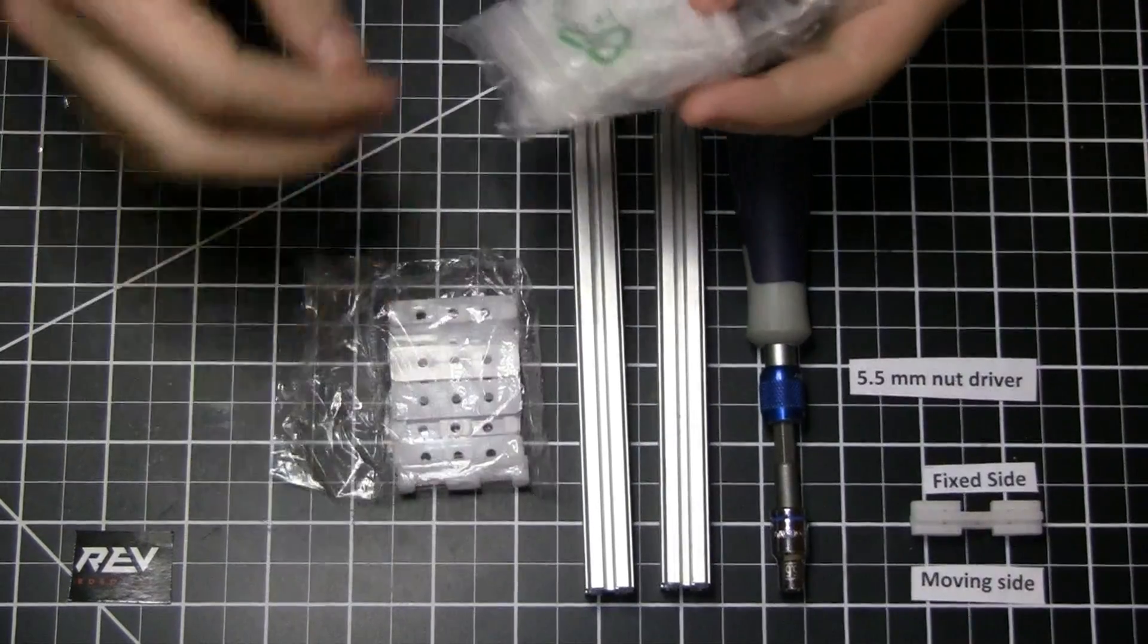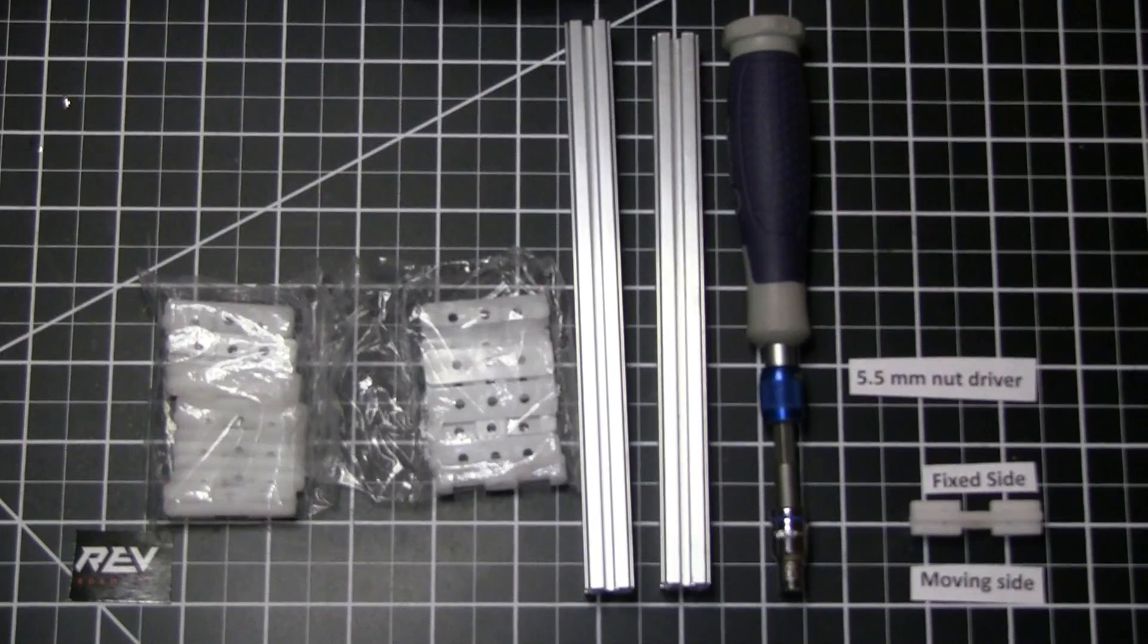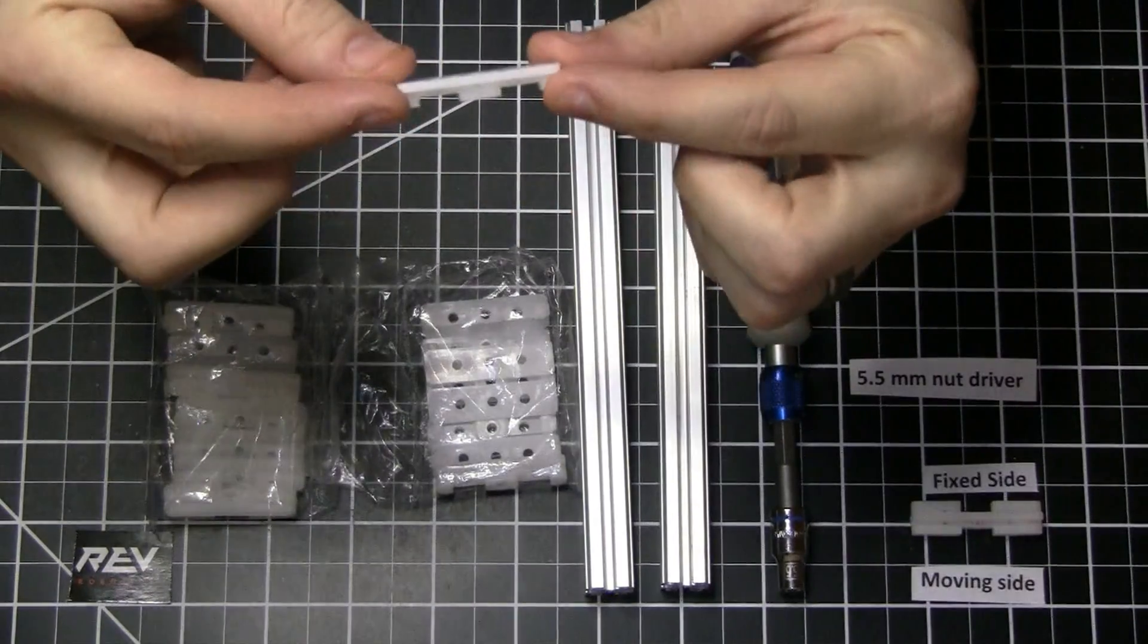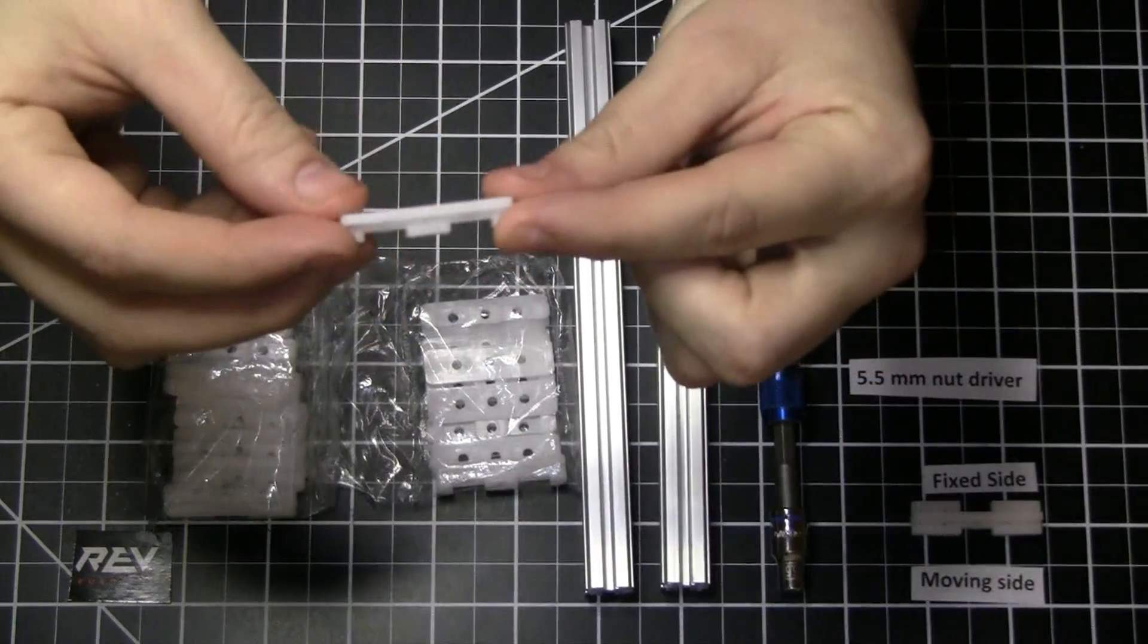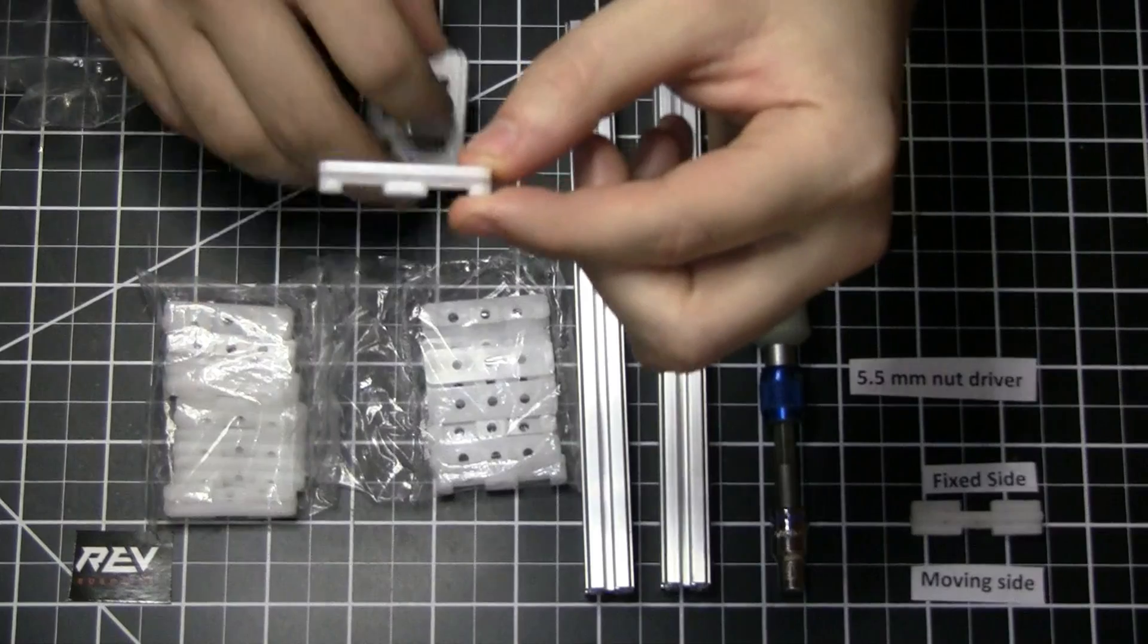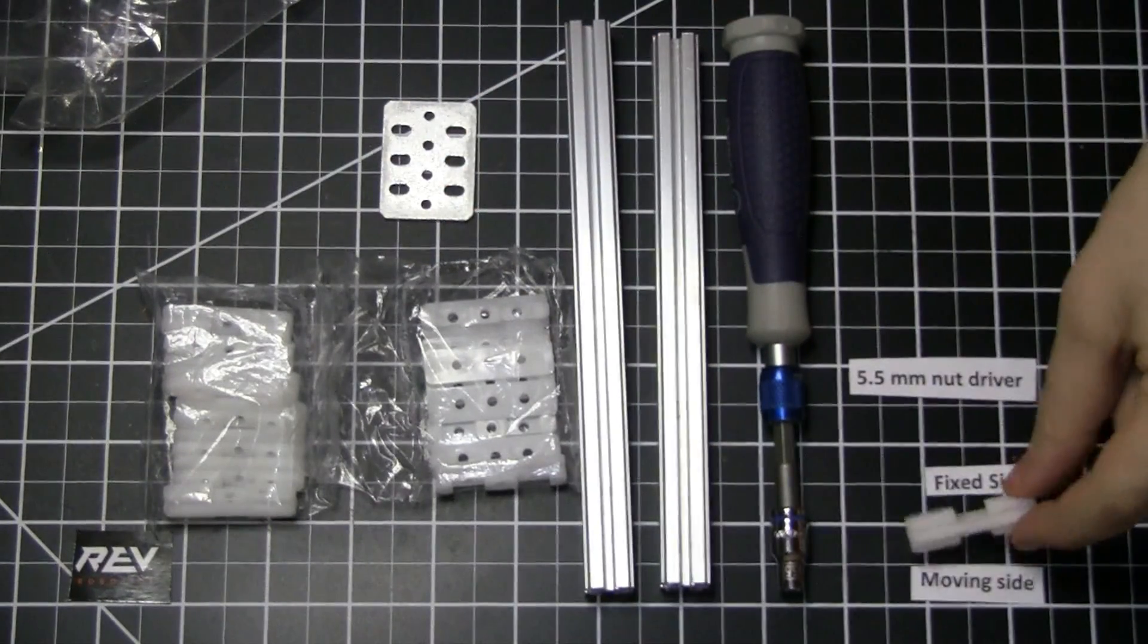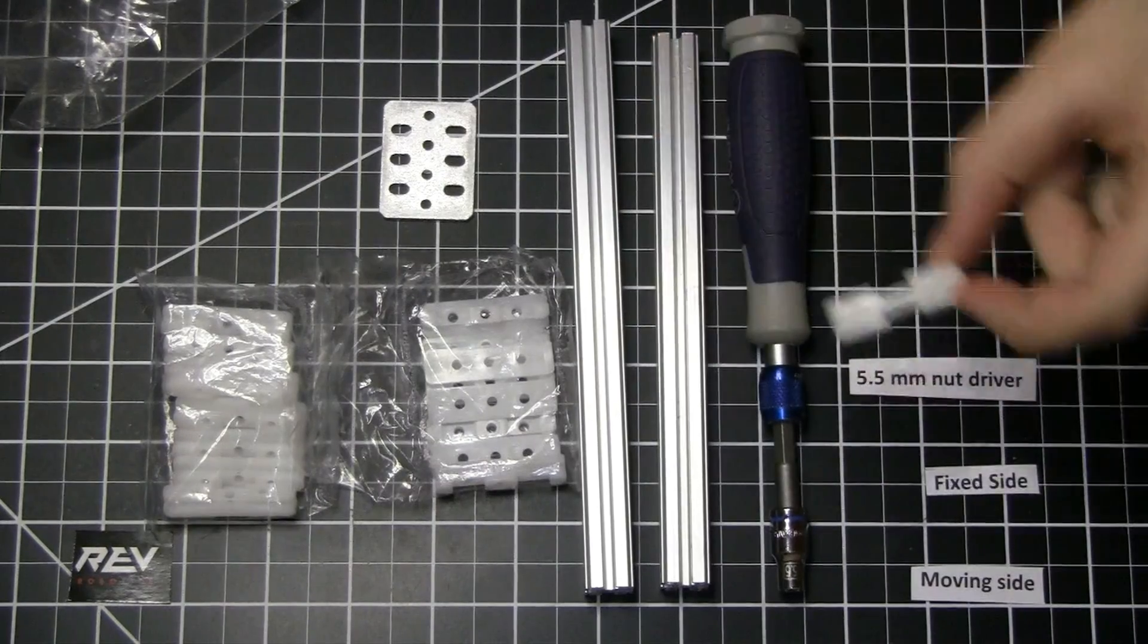To go over a couple of the quick parts here that you have in your kit, you actually have two different types of sliders. You've got a one-sided slider which was used on the outside in conjunction with the metal plates, and you've got the in-between slider which is used in between two pieces of extrusion.